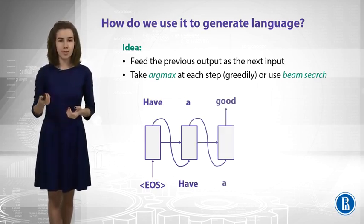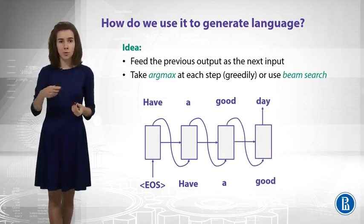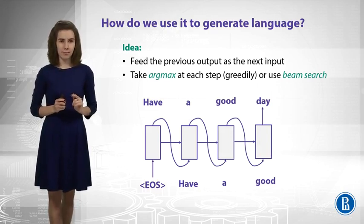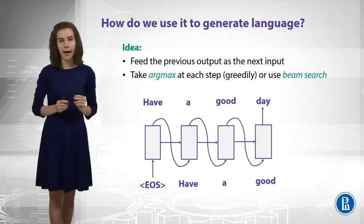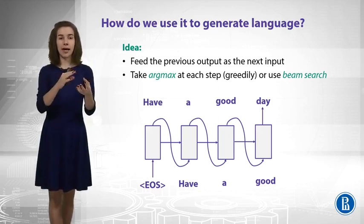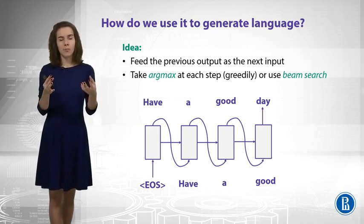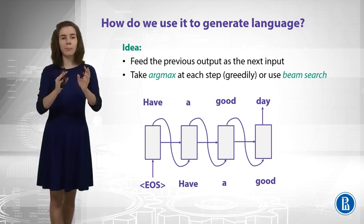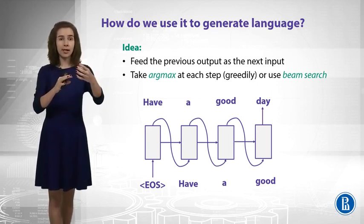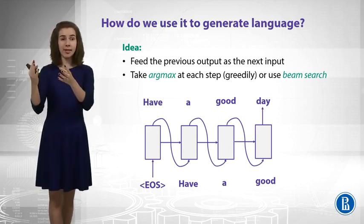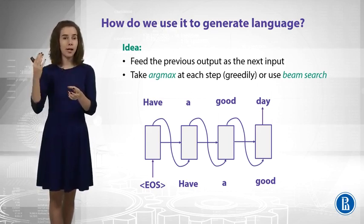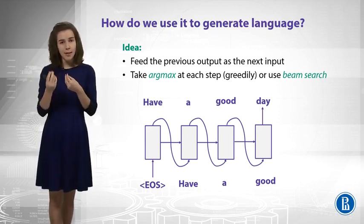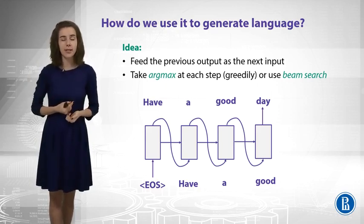We took argmax every time, so it was a greedy approach. Why is this a problem? Because when you see your sequence — 'have a good day' — that you generated, it's probably not the sequence with the highest probability. Because at some step you could take some other word, but then get a reward during the next step, since you would get a high probability for some other output given your previous word.